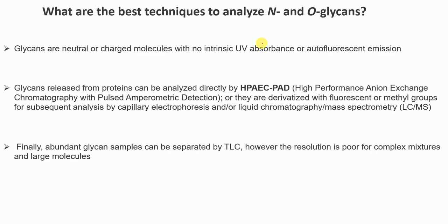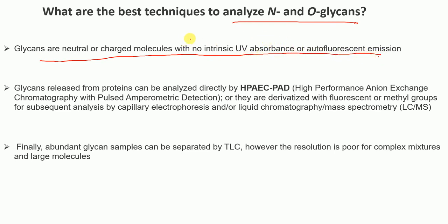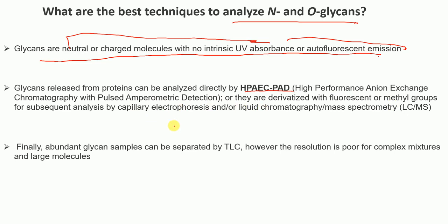What are the best techniques to analyze N- and O-glycans? Glycans are neutral or charged molecules with no intrinsic UV absorbance or autofluorescence. Glycans released from proteins can be analyzed directly by HPAEC-PAD (high-performance anion exchange chromatography with pulsed amperometric detection), or derivatized with fluorescent or methyl groups for analysis by capillary electrophoresis or liquid chromatography-mass spectrometry (LC-MS).